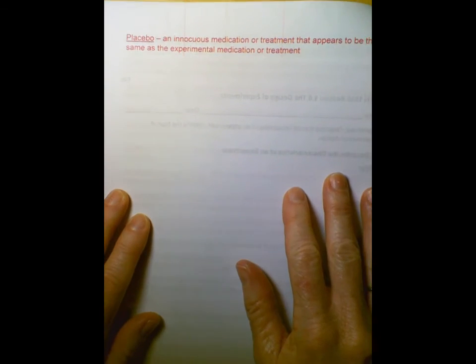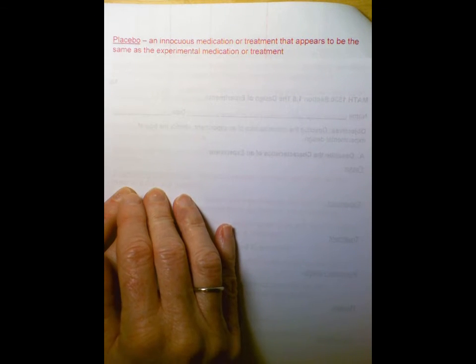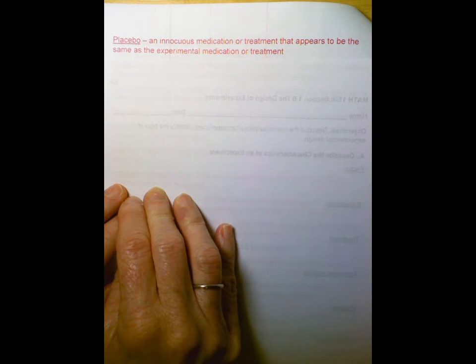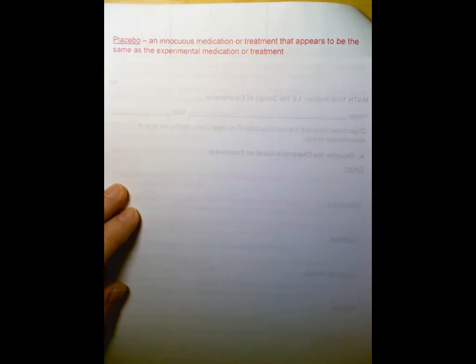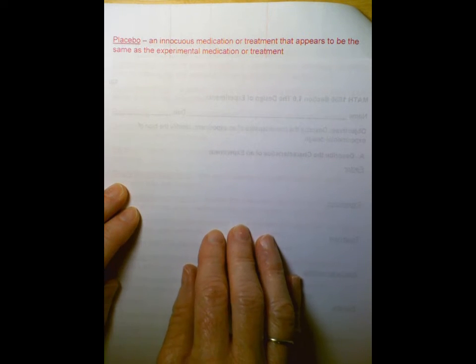Our next one is placebo. A placebo is an innocuous medication or treatment that appears to be the same as the experimental medication or treatment. You've probably heard that word before. In some medical tests, we might refer to a sugar pill. It looks just like the pill that the patients who are trying this new medication is taking. So the people taking the placebo don't know if they're taking the actual medication or if they're just getting a sugar pill.